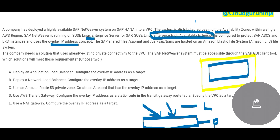SAP has some shared files they have kept in EFS — the Elastic File System. They are already making use of existing private connectivity to the VPC. Now, what solution should we use to meet these requirements?